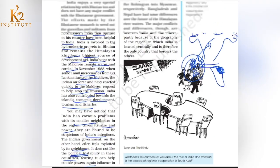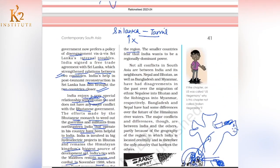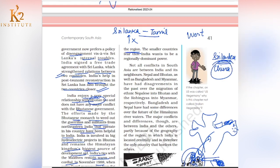Political instability can allow outside powers — like China — to gain influence in the region. China has already been building ports and bases in Bangladesh and Sri Lanka. If Sri Lanka is weak, China can control it, which is a major concern for India. So India has a strong interest in ensuring political stability in all its neighboring countries.